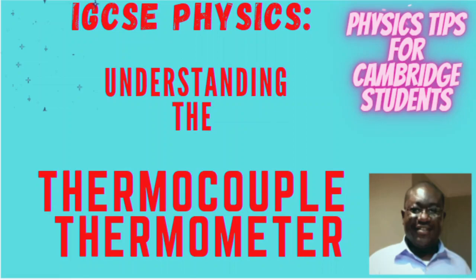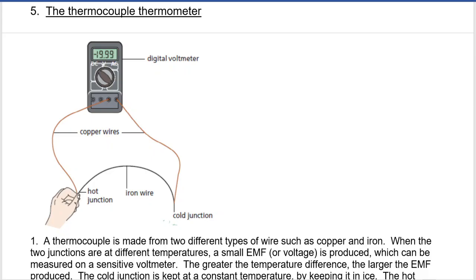Now the thermocouple thermometer is made up of two dissimilar metals, that is metals that are not the same. In this case, as you can see from the diagram, this thermocouple has been made from copper and iron. So we have two copper wires, one going to the positive, the other going to the negative of the digital multimeter. And then we have an iron wire that closes the gap, forming a cold junction and a hot junction. So these are the two junctions that are made in the process.